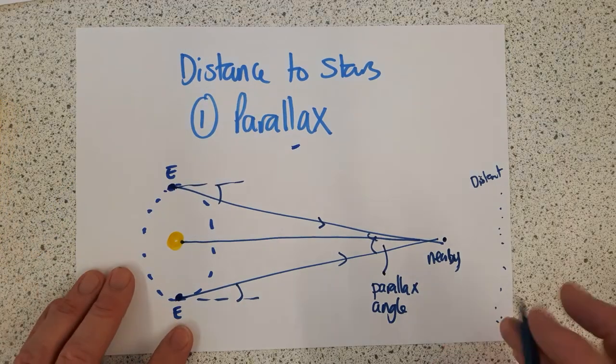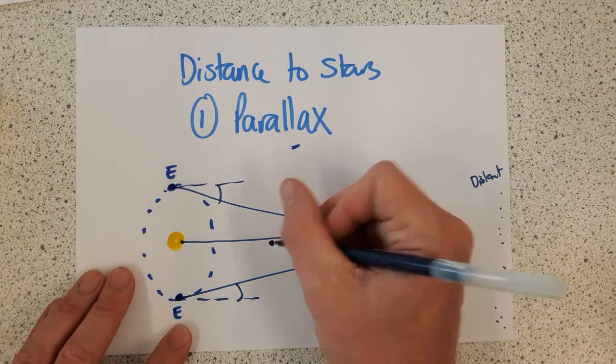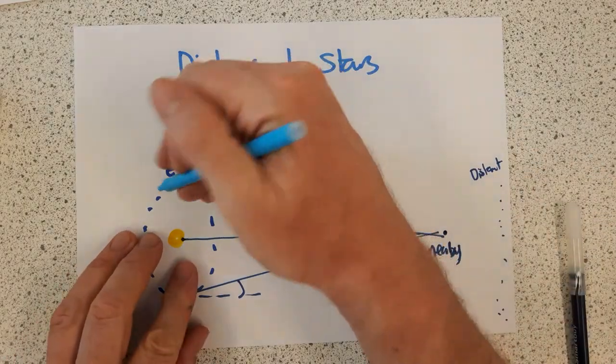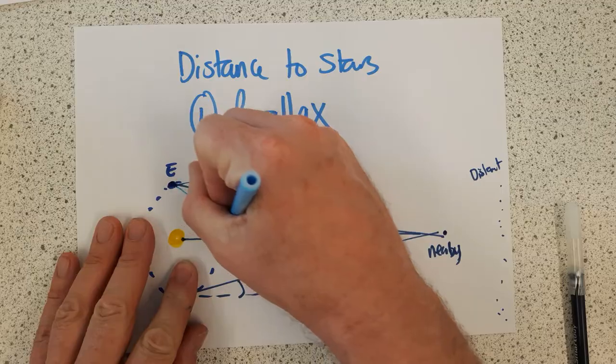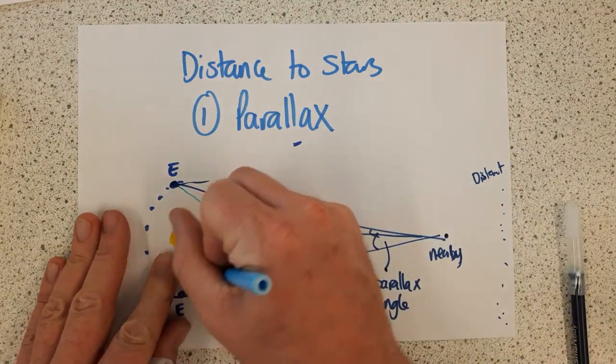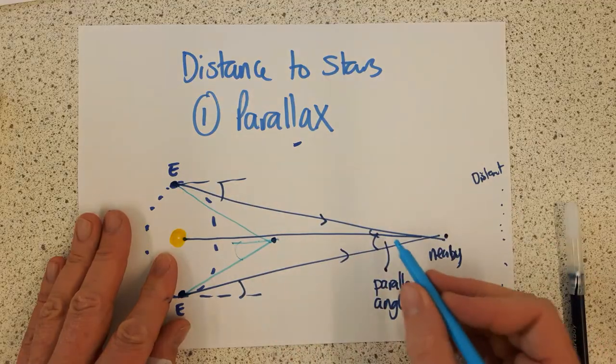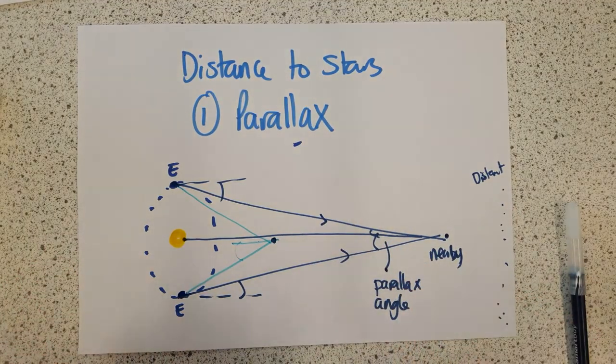If I take a much more nearby star, if I do a ridiculous drawing of one there, which is clearly not to scale, we can see, I hope, that when you've got a very nearby star, the parallax angle is bigger